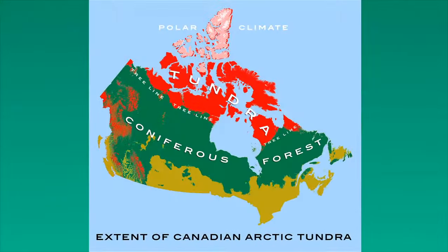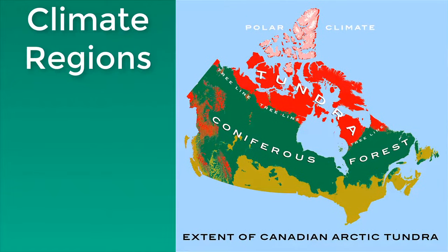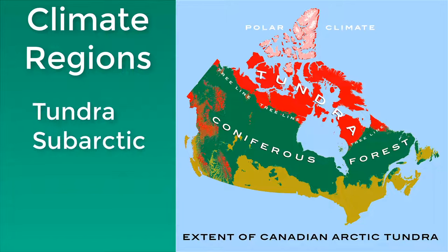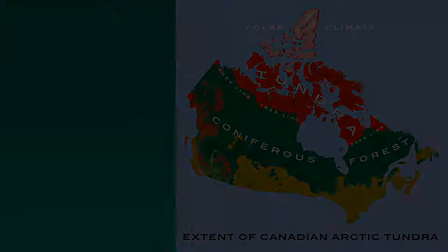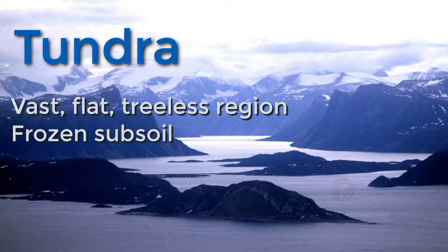If you look at any climate map of Canada, you'll see the vast majority of its landmass broken into two main climate regions: the tundra and the subarctic, with some maps adding a polar climate region in the very far north. As we learned before, tundra refers to a vast, flat, treeless region in which the subsoil is permanently frozen.